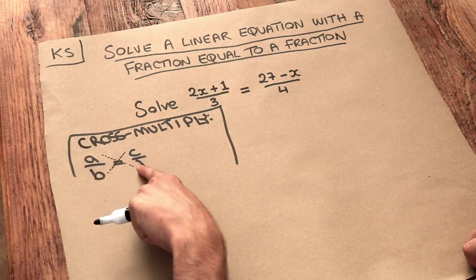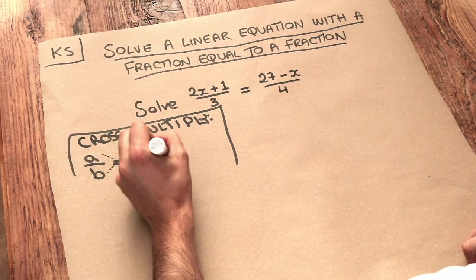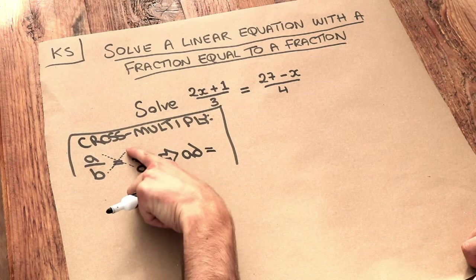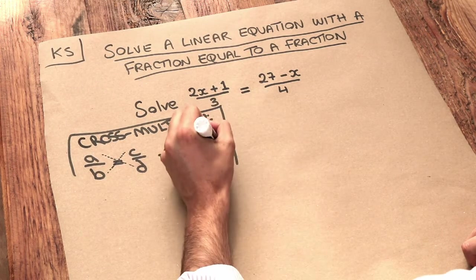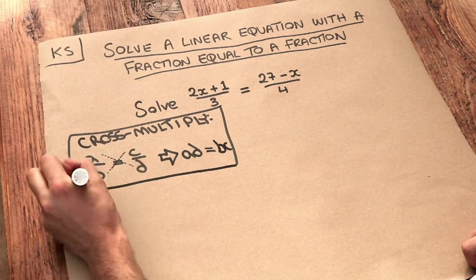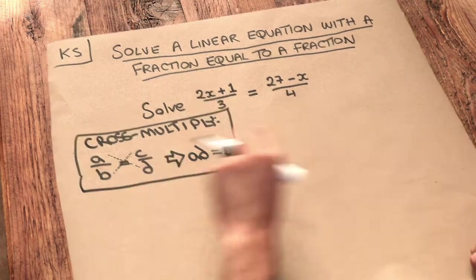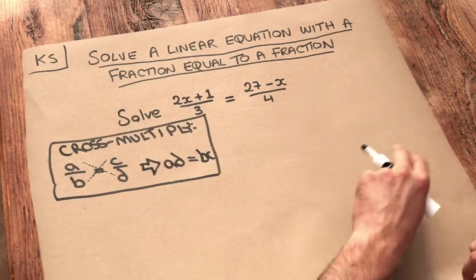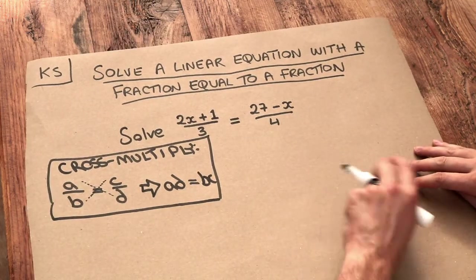So we do a times d, which equals ad, and that equals c times b, which is bc. That completely gets rid of all the fractions in your equation. To keep this video short, I'm not going to explain how that works, but let's do it on this equation here.